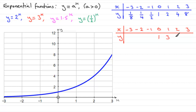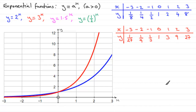Then 3 to the power 1 is 3, 3 squared is 9, 3 cubed is 27. For negative powers: 3 to the minus 1 is one third, 3 to the minus 2 is 1 over 9, and 3 to the minus 3 is 1 over 27. The graph is a lot steeper to the right of the y-axis than y equals 2 to the power x, but on the left it goes below that graph. Again it never crosses the x-axis, so the x-axis is an asymptote.